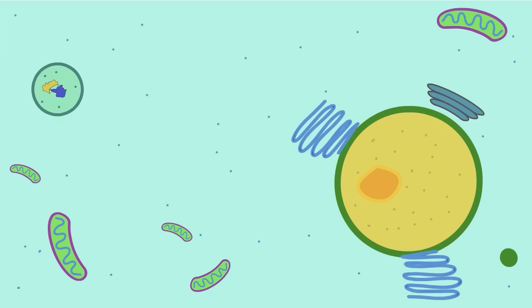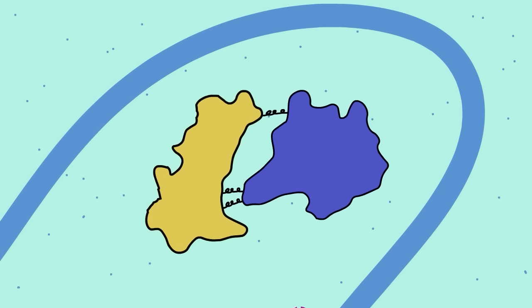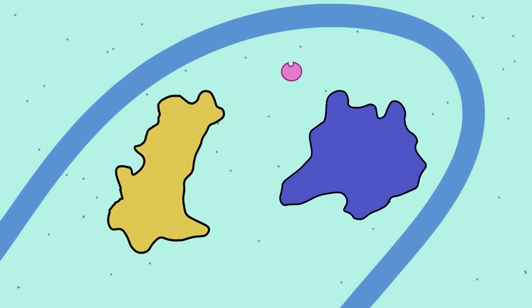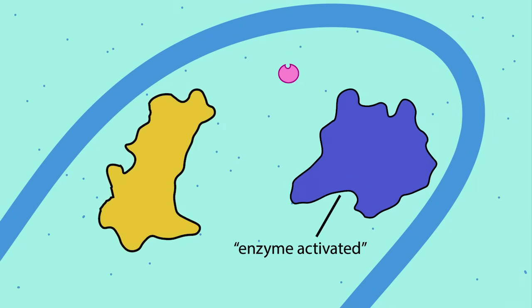Once inside the cell, vesicles shuttle ricin to the Golgi apparatus. Here, an enzyme called disulfide isomerase cleaves the disulfide bond joining the toxin A and toxin B proteins. Once separated, ricin toxin A has an enzyme pocket that becomes exposed, allowing it to function as an enzyme.